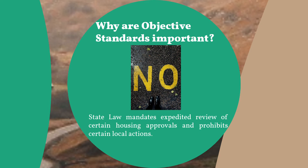All housing development projects are subject to the Housing Accountability Act as well, be they residential-only projects, mixed-use projects with at least two-thirds of the square footage devoted to residential, transitional housing, or supportive housing. The Housing Accountability Act applies to both affordable and market-rate units. Per the Housing Accountability Act, or HAA, if a housing development project complies with objective general plan, zoning, and subdivision review standards, it is very difficult for the City of Agoura Hills to deny the project or lower the project's density.